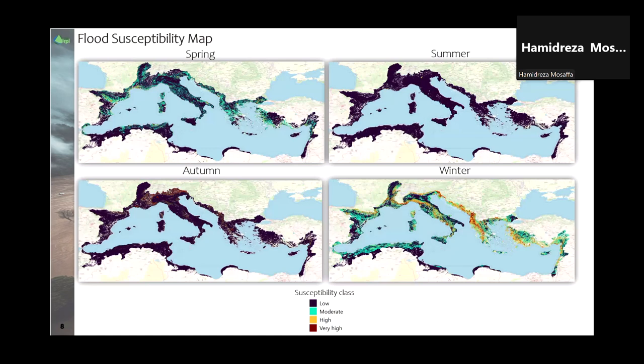This is the final product. The flood susceptibility maps are shown for different seasons, with susceptibility classes ranging from low to very high. As you can see, the maps for each season are distinctly different, which highlights the importance of our approach. For example, some parts show very high susceptibility in autumn, which differs from winter, summer, and spring.